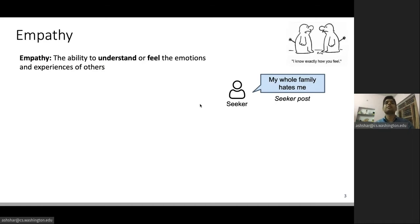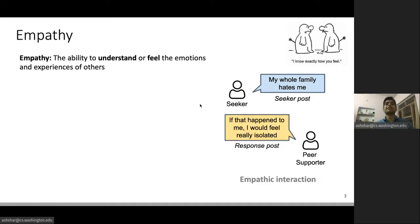Consider an example where the Seeker posted, 'my whole family hates me.' One way of responding empathically would be to understand that if the family of the Seeker hates them, it could make them feel isolated. So an empathic peer supporter would say, 'if that happened to me, I would feel really isolated.'